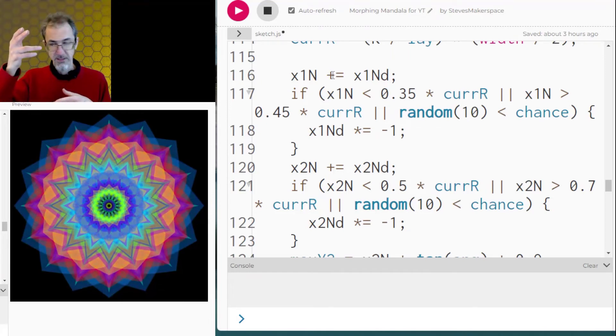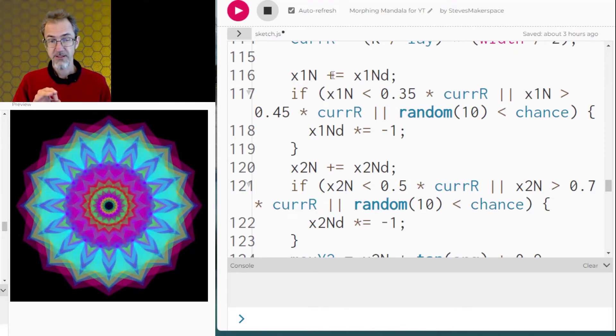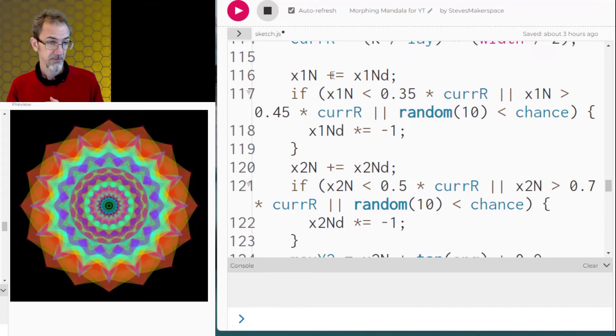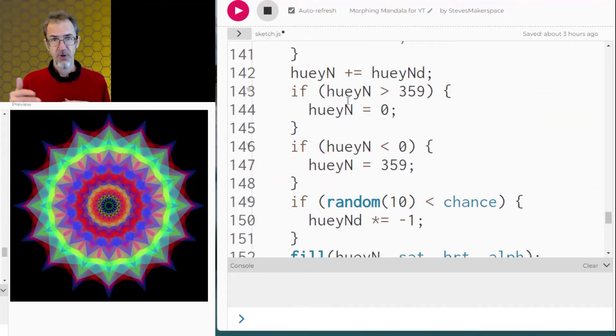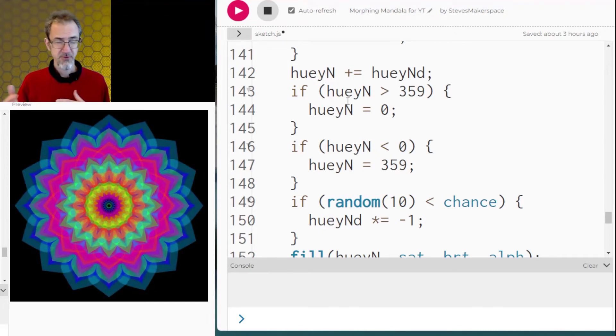If it hits the other edge of the boundary it also reverses direction. And then it also has a random chance to change direction. It's a very slim chance but it's there. The hue also has a direction where either it's going up or it's going down and it has a random chance of changing direction.